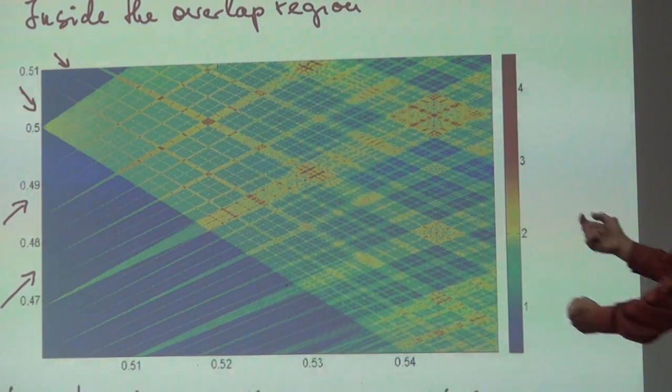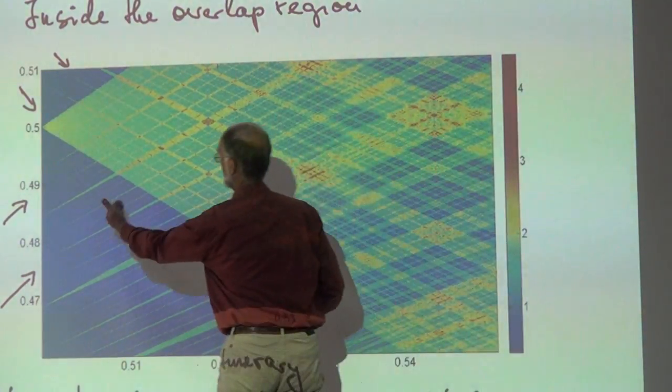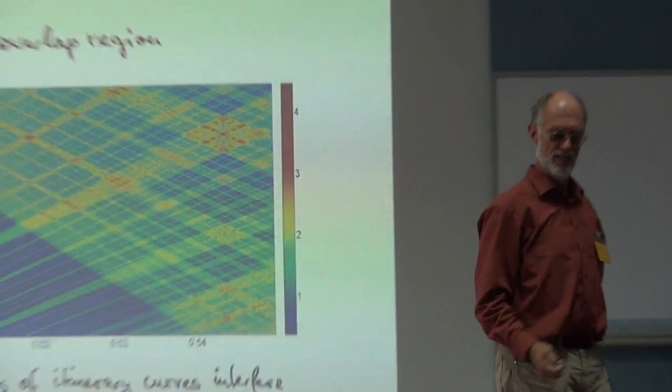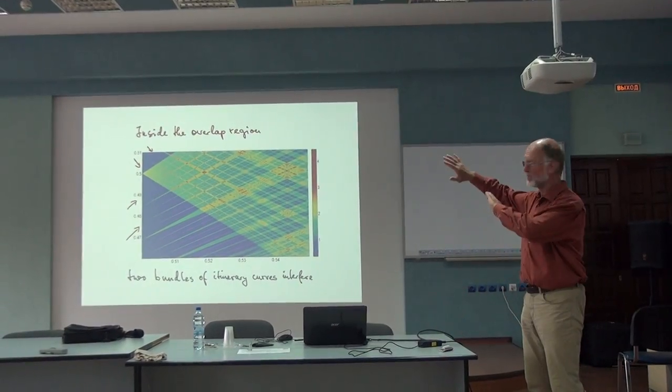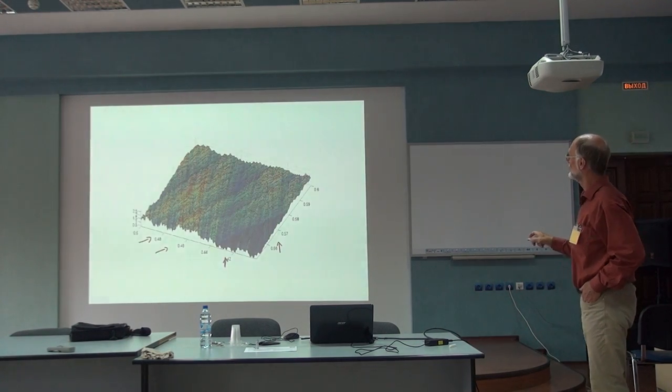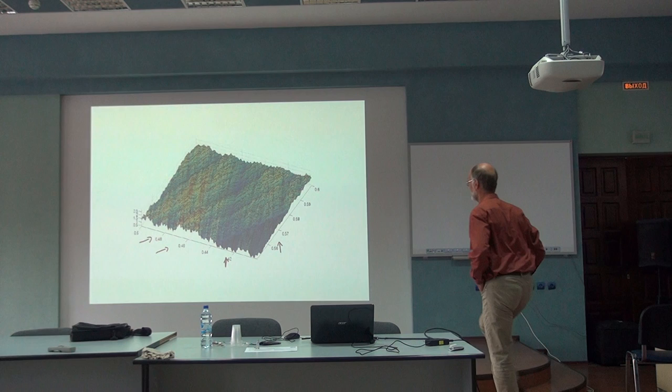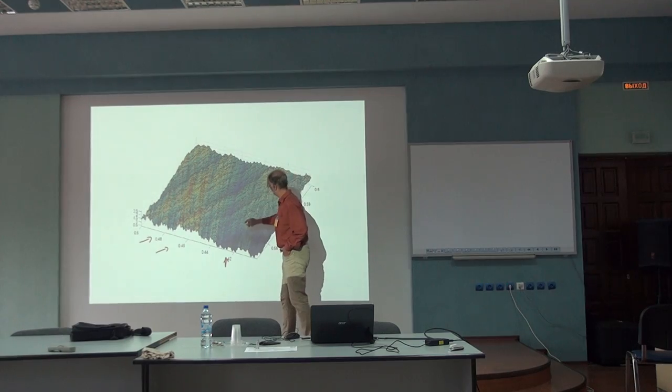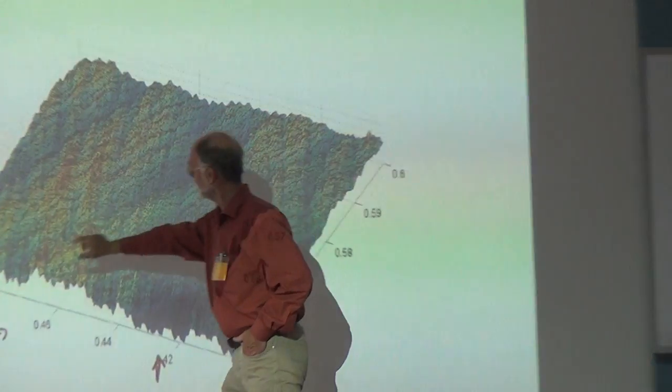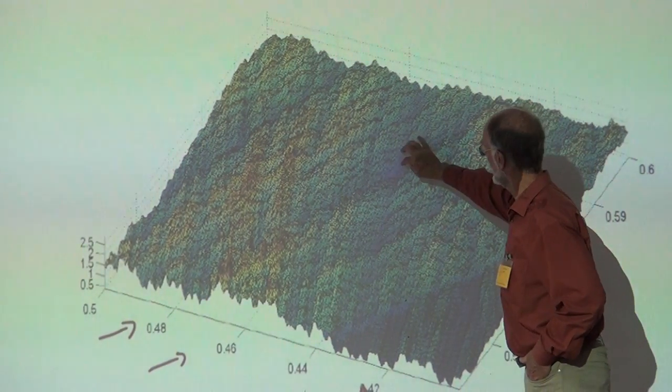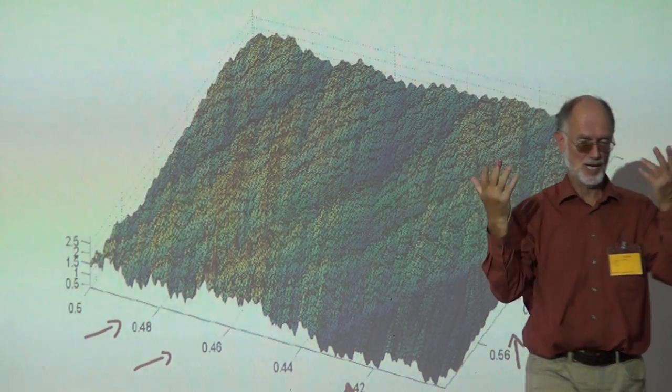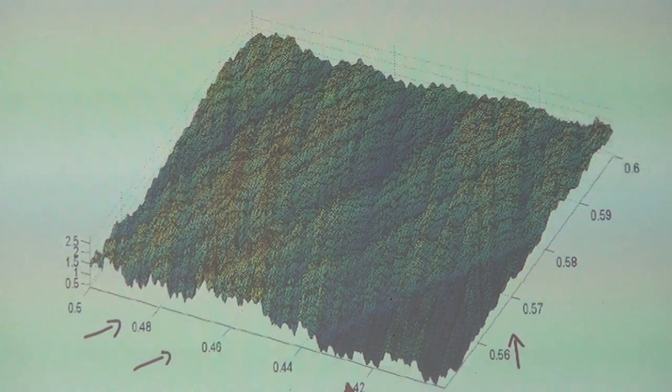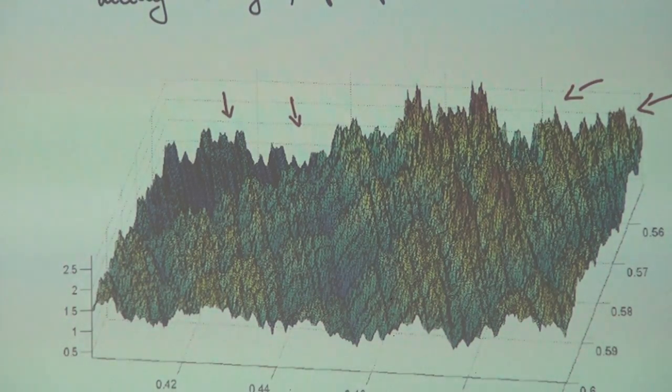I want to see now when I go in here into the overlap region how this looks in the overlap region and I make another picture now, three dimensional picture just to see. And we have some kind of two overlapping waveforms. So one goes here. I don't know whether it is visible. Here we have the one and we have these kind of valleys.